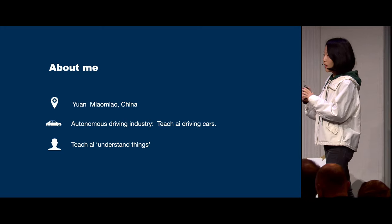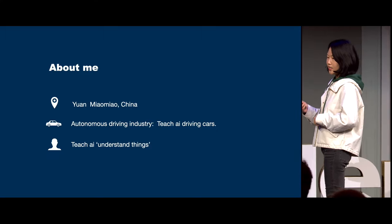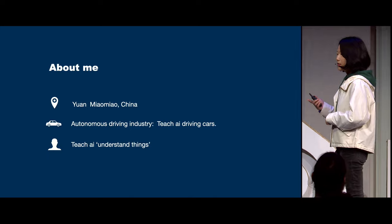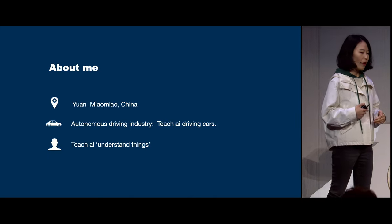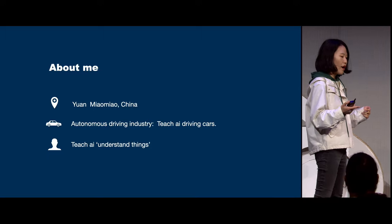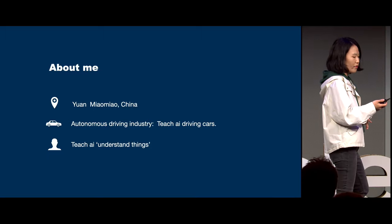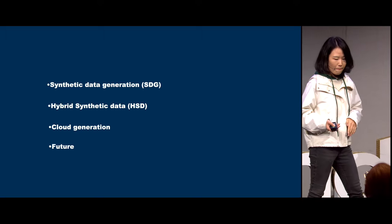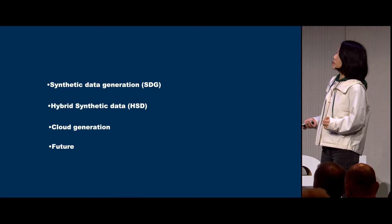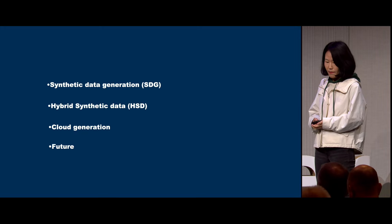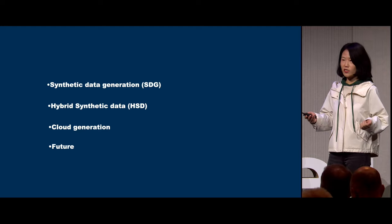Based on an image, our AI should be able to understand what objects are in the scene and their position, location, rotation, and velocity — so our AI can make a decision on what to do in that scenario. Today I'm going to talk about synthetic data generation, hybrid synthetic data, cloud generation, and some future directions.